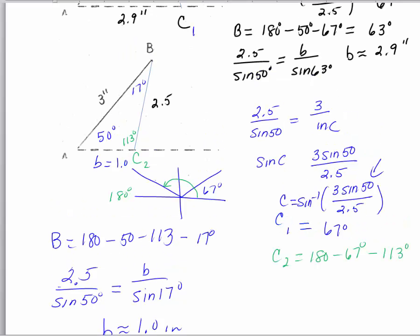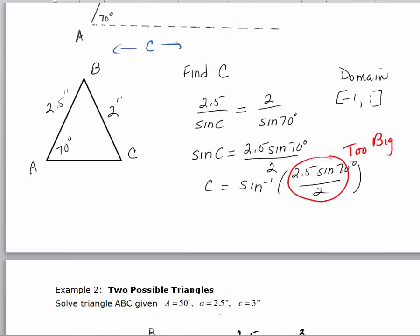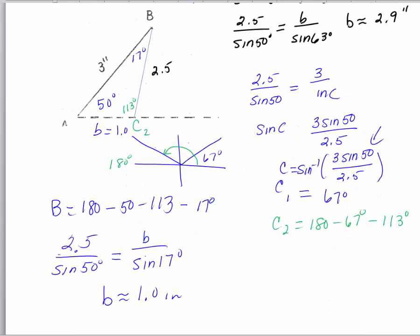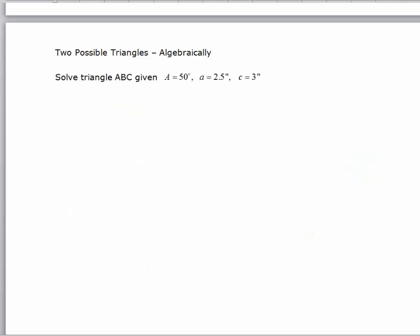Geometrically, we've got the acute angle C, which resulted in one triangle. And that second possible angle — an obtuse angle — had the same exact trig ratio as the 67-degree angle, giving us the second triangle. But how can you tell algebraically? That's what I want to show you in the next portion. We want to look at the side-side-angle scenario algebraically and see how you can figure out that there are two possible triangles.